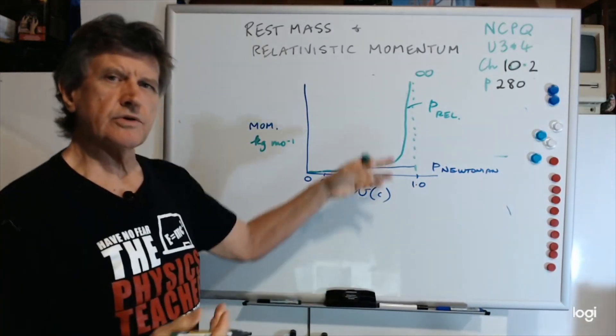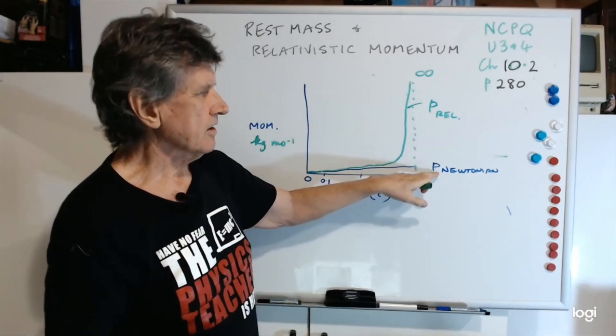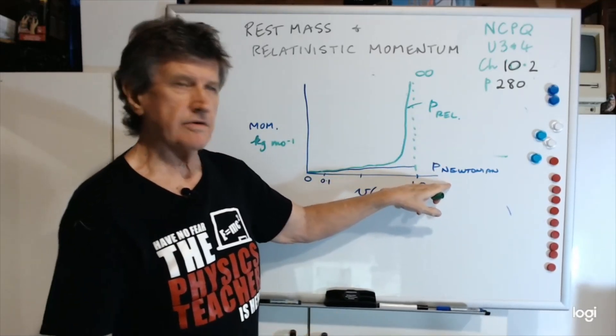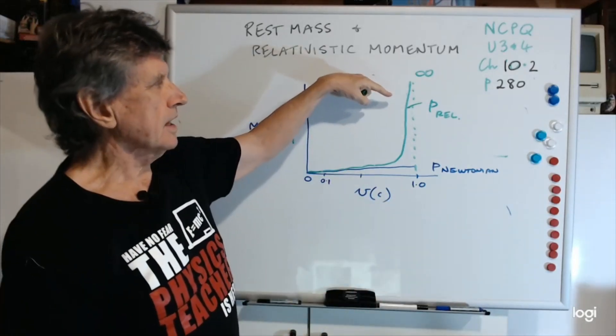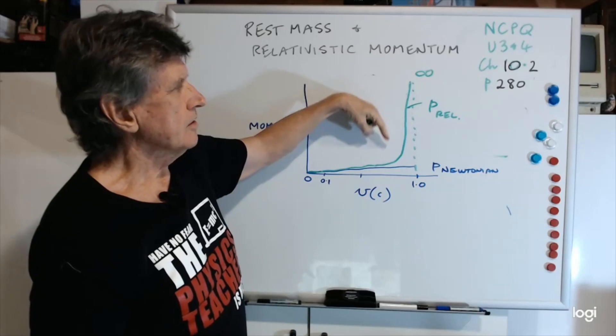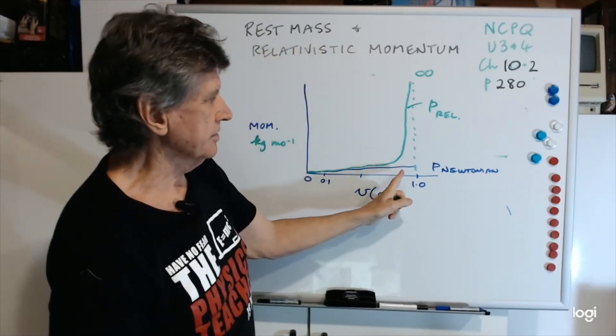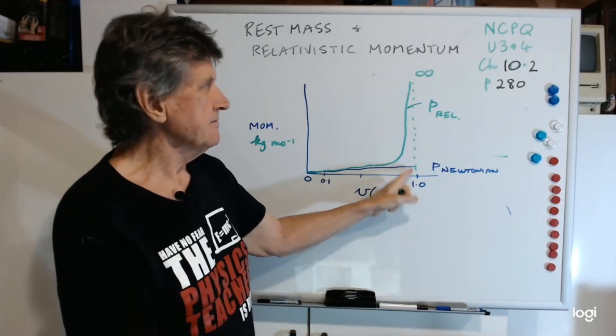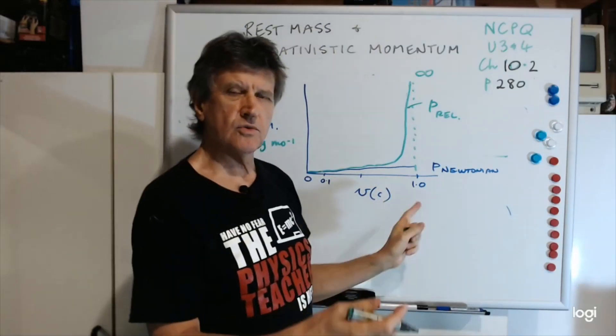When you're doing these questions, you could use a symbol like REL, or you could use a little v. Here, I'd just put p Newtonian, or p classical. The relativistic momentum really shoots off once you're getting up to 0.8, 0.9. When you get up to 0.99c, you're way, way off the scale. And if you ever got to 1c, it'd be infinity.